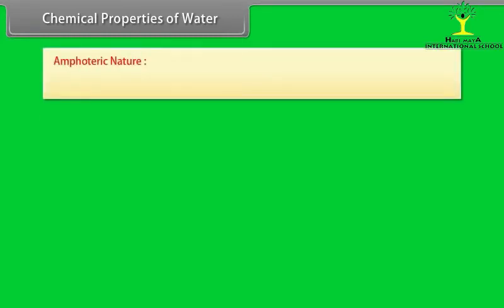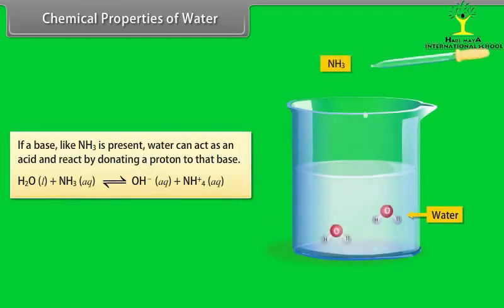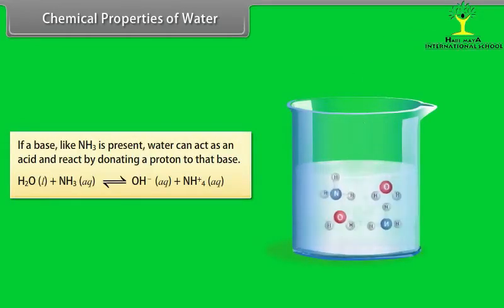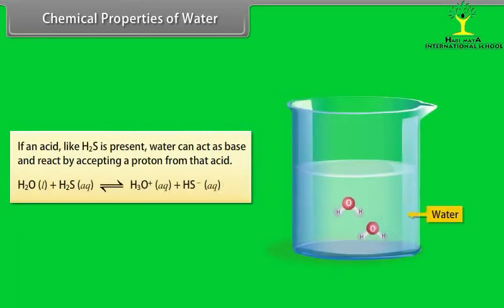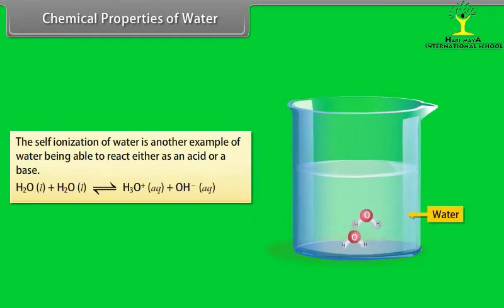Chemical properties of water. Amphoteric nature: The ability of some chemicals to act either as an acid or a base is called amphotericism. If a base like NH3 is present, water can act as an acid and react by donating a proton to that base. If an acid like H2S is present, water can act as a base and react by accepting a proton from that acid. The self-ionization of water is another example of water being able to react either as an acid or a base.